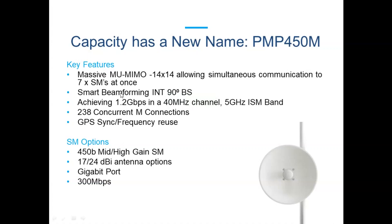Smart beamforming is a feature integrated in the 90-degree base station that is the 450M CN Medusa — a radio and antenna in one covering a 90-degree area, meaning if you want to cover a full 360 degrees you'll need four of these up on a tower back-to-back. What smart beamforming does is map out the most efficient route of communication between the base station and your subscriber module. A traditional radio has to work out that route every single time it communicates, whereas smart beamforming identifies the most efficient route, reutilizes it every time, and simultaneously avoids noise interference from alternative networks in the area.